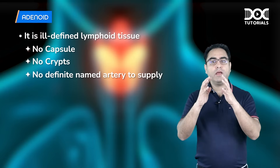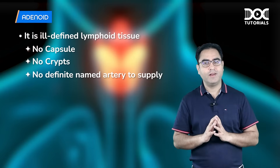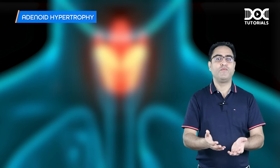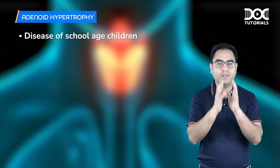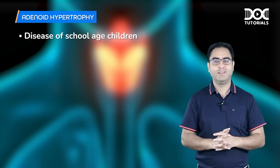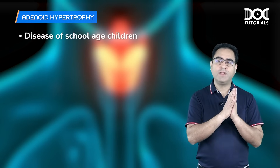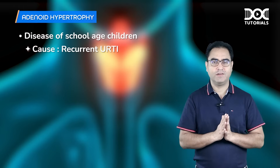Adenoid is normal tissue in children, but adenoid hypertrophy is a disease of school-age children. The cause is recurrent upper respiratory infection.